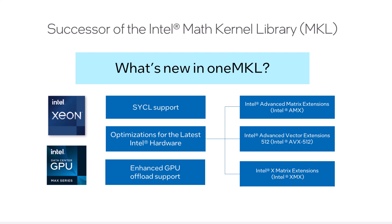OneMKL is an advancement of Intel MKL with the added capabilities of SYCL support and enhanced GPU offload. It enables targeting GPUs with the latest version of OpenMP and SYCL frameworks. It also comes with an expanded coverage of CUDA Library Function API compatibility on Intel CPUs and GPUs. OneMKL also provides optimizations for Intel Data Center GPU Max Series and 5th Gen Intel Xeon Scalable Processor, also called Emerald Rapids. Although the pre-2020 MKL version can be used with Intel's latest hardware, you need OneMKL to leverage the optimizations and advanced GPU support.